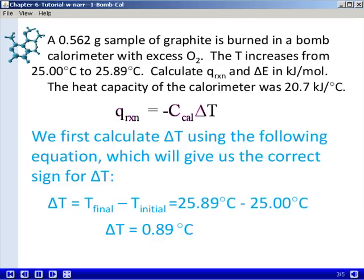The first thing we'll do is calculate ΔT using the following equation, which will automatically give us the correct sign for ΔT, remembering that delta always means the final value of something minus the initial value. ΔT is therefore equal to the final temperature minus the initial temperature, and that gives us a value for ΔT of 0.89 degrees Celsius.